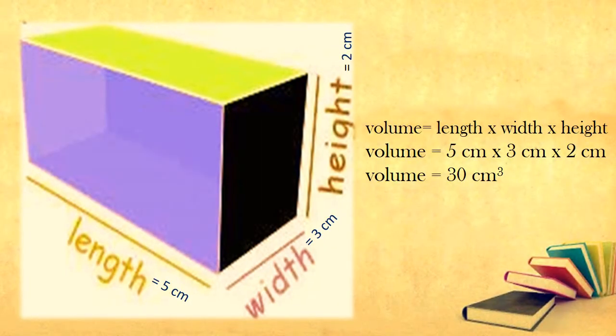How will you find the volume of a solid? You can determine the volume of a regularly shaped object by measuring its size using a ruler. For example, the volume of a rectangular object can be determined by measuring its length, width, and height.